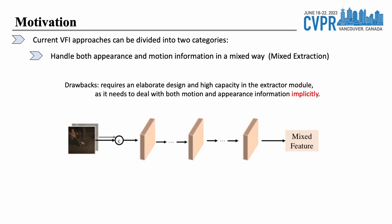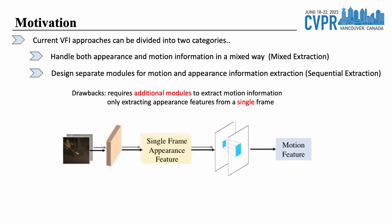When it comes to extracting motion and appearance information, current VFI methods can be divided into two categories. The first category involves handling both types of information in a mixed manner, concatenating two adjacent frames and feeding them into a backbone of similar modules, generating features with mixed motion and appearance information. Although simple, it requires a high-capacity extractor module and the lack of explicit motion information constrains arbitrary time-step interpolation. The second approach involves designing distinct modules, such as cost-volume, to extract motion information, which results in significant computational burden. Furthermore, extracting appearance features from a single frame ignores the correspondence of appearance information between frames for the same regions, which is a valuable cue for VFI.